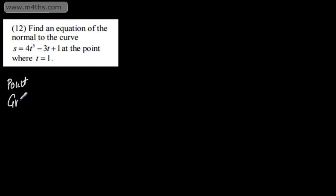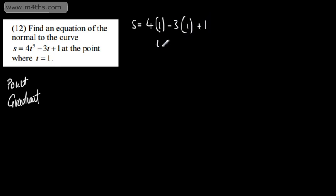We're asked to find an equation of the normal to the curve s = 4t⁵ - 3t + 1 at the point where t = 1. This is a normal, so we just need an equation — no particular form required. We need a point and a gradient. When t = 1: s = 4 lots of 1 minus 3 lots of 1 plus 1, which is 4 minus 3 plus 1, giving 2. So the point is (1, 2).